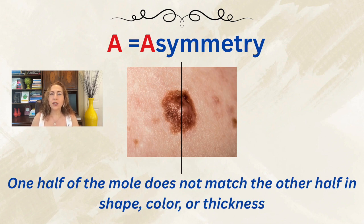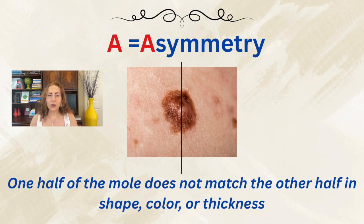Imagine drawing a line through the middle and seeing two very different halves. The clinical insight here is that asymmetry suggests uncontrolled and uneven growth, which is a hallmark of malignancy. It's one of the earliest visual cues that a lesion may be suspicious and should be biopsied — not definitely a cancer, but should be biopsied.